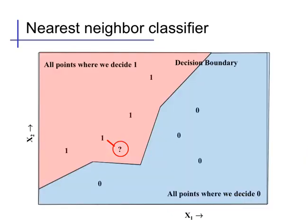We can evaluate this procedure at every possible point x, and that will define a function. At all points x where we're closest to a 1, we'll predict 1. At all points x where we're closest to a 0, we'll predict 0. Between them, there'll be an abrupt change called the decision boundary. The decision boundary indicates the set of points at which on one side we're predicting 1, and on the other side we're predicting 0.